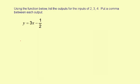Using the function below, list the outputs for the inputs of 2, 3, 4. Put a comma between each output. The function is y equals 3x minus 1 half. I'm going to input 2, then 3, then 4, and get three different outputs for y.